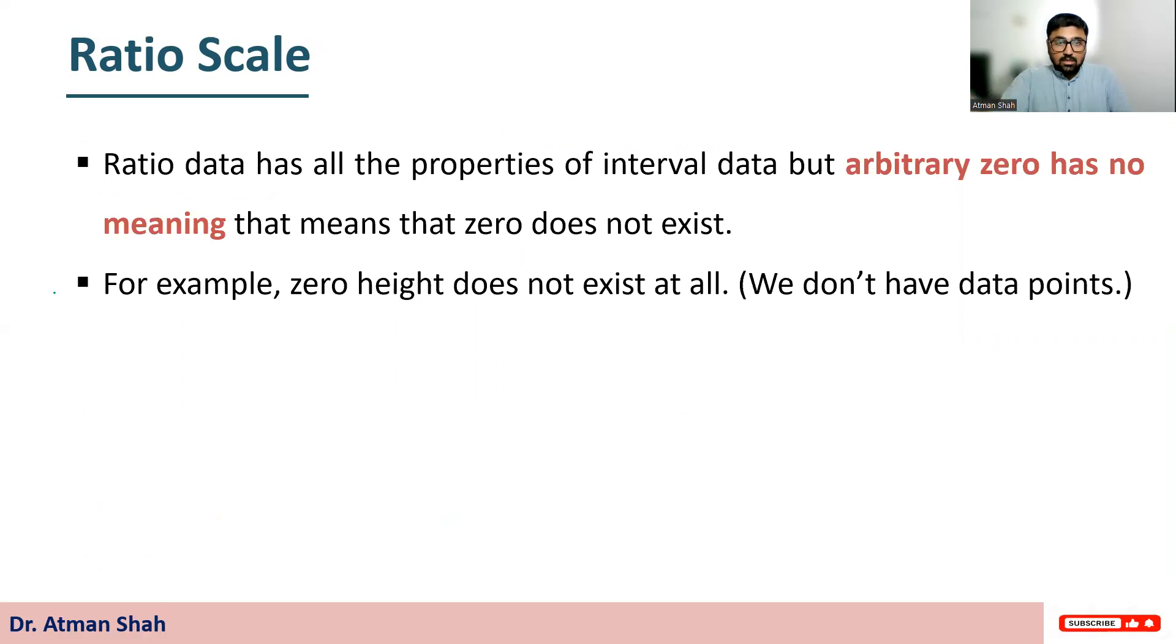For example, height. So zero height does not exist at all. And therefore you don't have the data points when height is zero. So height is our ratio scale variable.